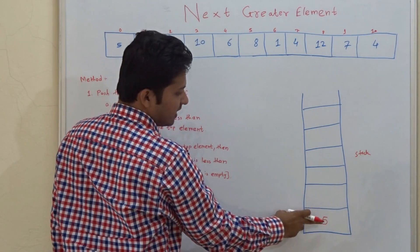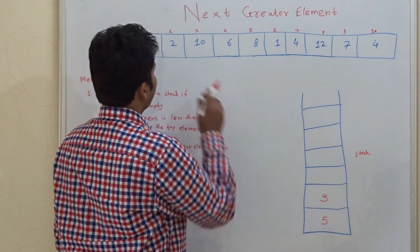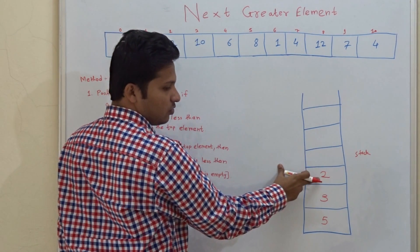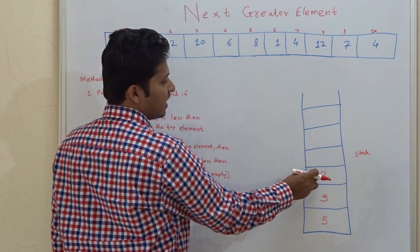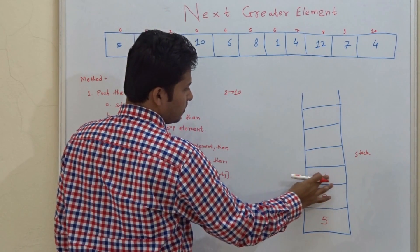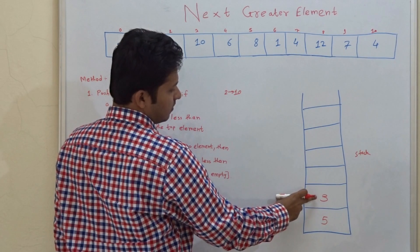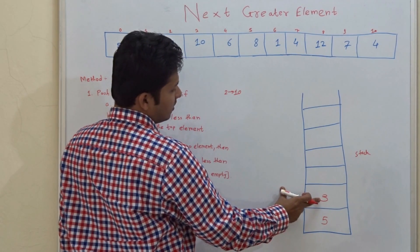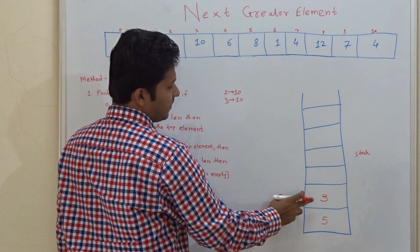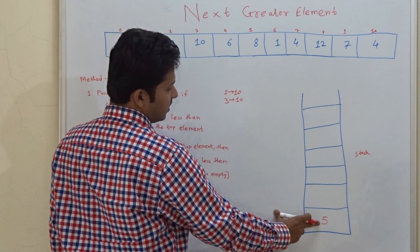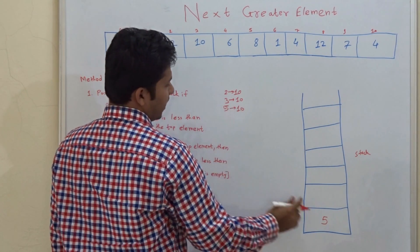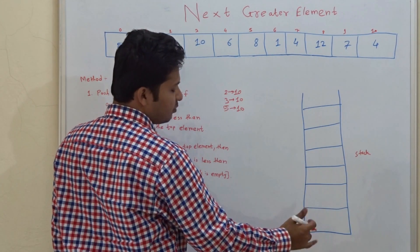First we push 5. As the stack is empty, we directly push 5 without checking any condition. Then 3 — 3 is less than 5, so we push 3. 2 is less than 3, so we push 2. Now 10: 10 is greater than 2, so we cannot push 10 yet. This means the next greater element for 2 is 10, and we pop 2. Then 10 is greater than 3, so next greater element for 3 is 10, and we pop 3. Then 10 is greater than 5, so next greater element for 5 is 10, and we pop 5. As the stack is now empty, we push 10.